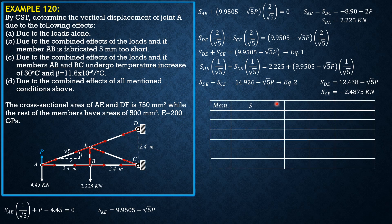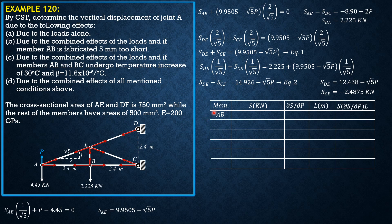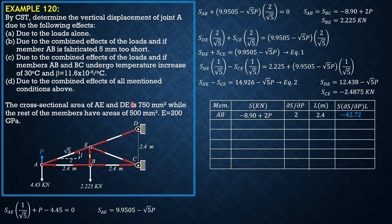Setting up the tabulation: columns are member, force (kN), ∂S/∂P, length (m), and the product (∂S/∂P) × length. Note that AE and DE have cross-sectional area 750mm² and the rest 500mm². For member AB: force = −8.9 + 2P, ∂S/∂P = 2, length = 2.4m, product (at P=0) = −8.9 × 2 × 2.4 = −42.72. Members AE and DE are marked with a different color since they have different cross-sectional areas.